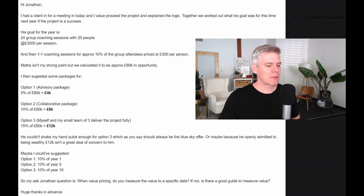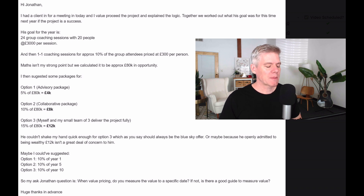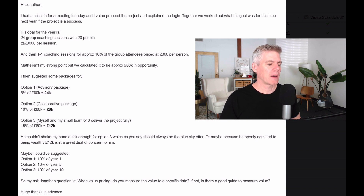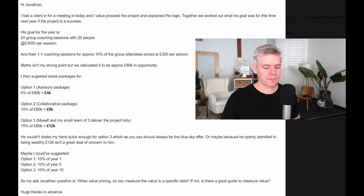So James suggested three tiers of pricing, which is what I recommend everyone does in their project proposals. Option one was 4,000 pounds — 5% of the 80K. Option two was 8,000 pounds — 10% of the 80K. And option three was 12,000 pounds — 15% of the 80K.